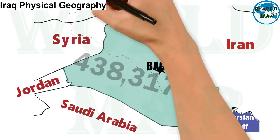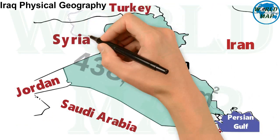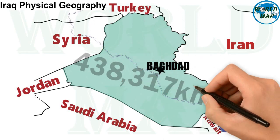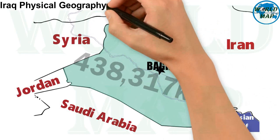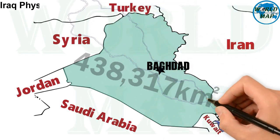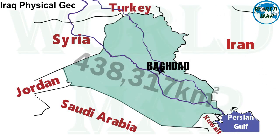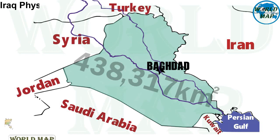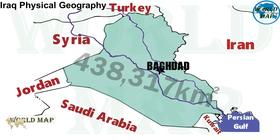The Tigris-Euphrates river system is a large river system in Western Asia which discharges into the Persian Gulf. Its principal rivers are the Tigris and Euphrates, along with smaller tributaries.